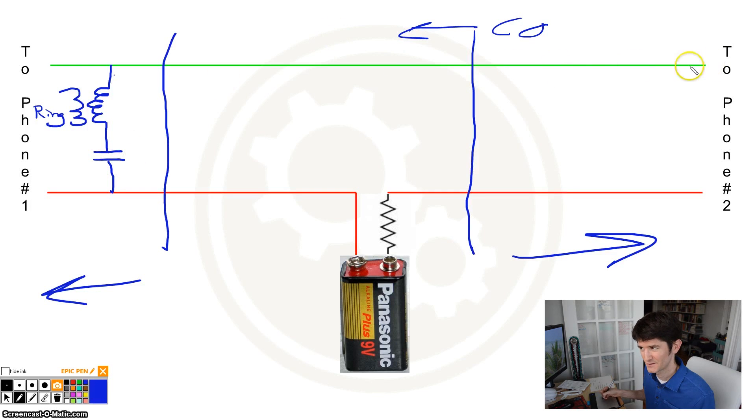The capacitor is here because there's always negative 48 volts on this line, and you wouldn't want your DC power to short itself out across the ringing circuit, so they have this capacitor to block the DC voltage. That's in both sides in our case. We have a phone here with a ringer, and a phone over here with a ringer.